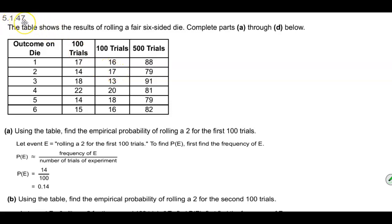For section 5.1.47, the question states the table shows the results of rolling a fair six-sided die, and we're going to complete parts A through D.